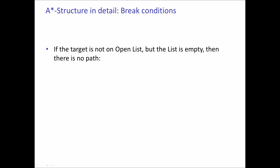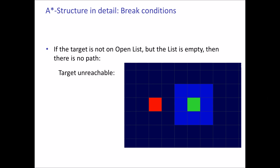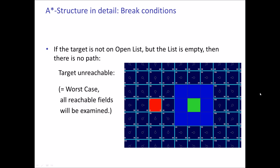The second breaking condition deals with another case. If the target is not on the open list but the open list is empty, then there is no path — the target is simply unreachable. For example, if the target is surrounded by obstacles, there is no path from start to target. In this case the A* algorithm will examine every reachable field and then determine there is no path — this is the worst case, where the algorithm will take the longest.